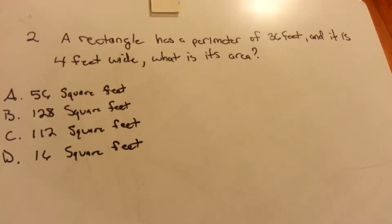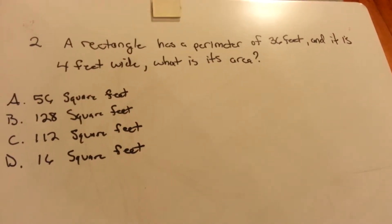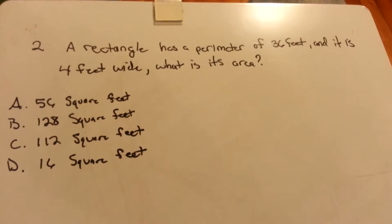Alright, so we have a rectangle has a perimeter of 36 feet and it is 4 feet wide. What is its area?